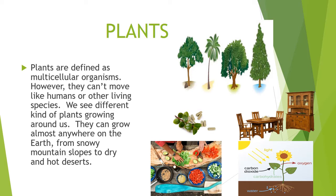There is a wide variety of plants worldwide. They can grow almost anywhere on the earth, from snowy mountain slopes to dry and hot deserts. Some are tall and some are short. Their body parts such as flowers, fruits, stems and roots are also different. For understanding all these plants, we have classified them into different categories.